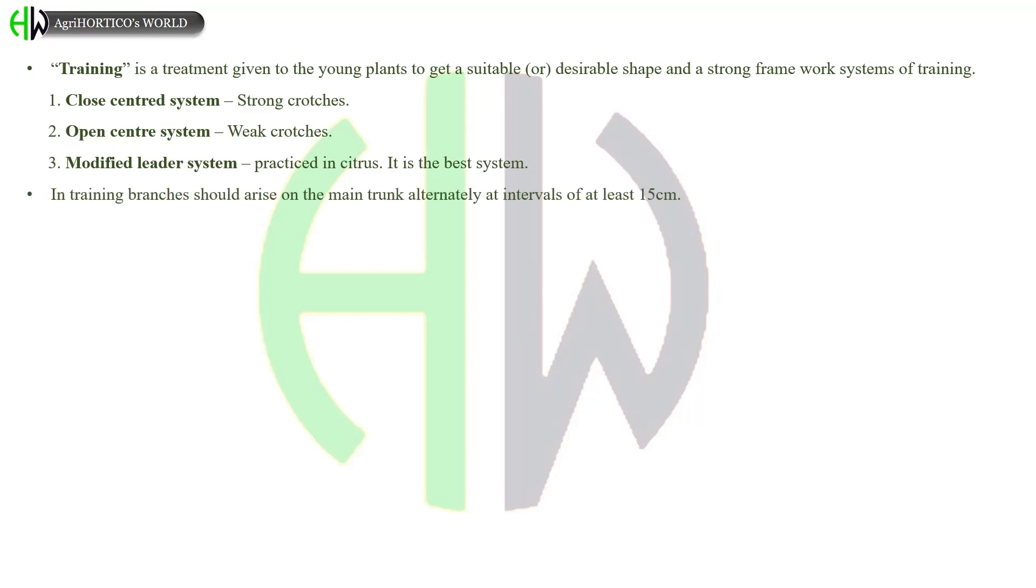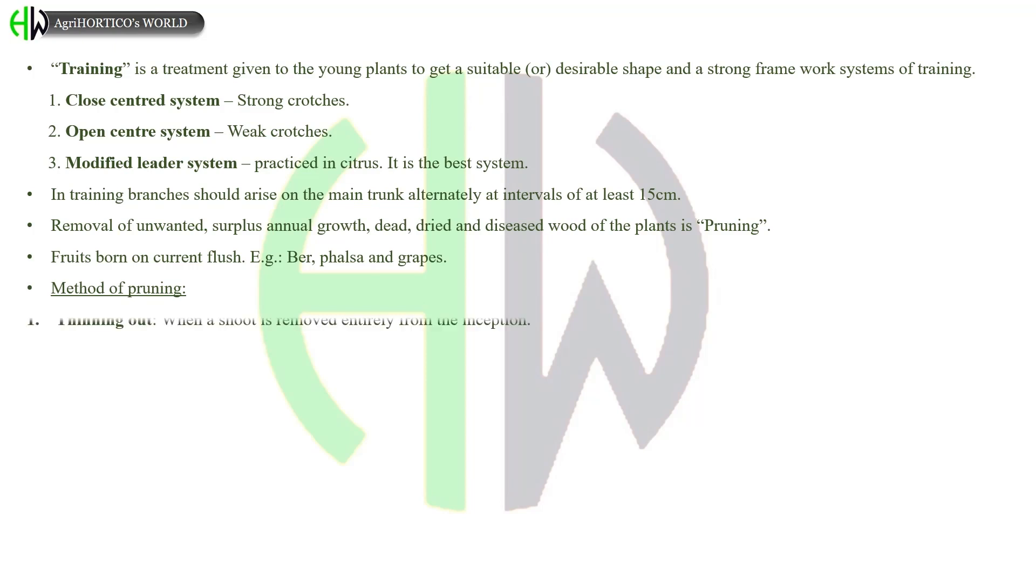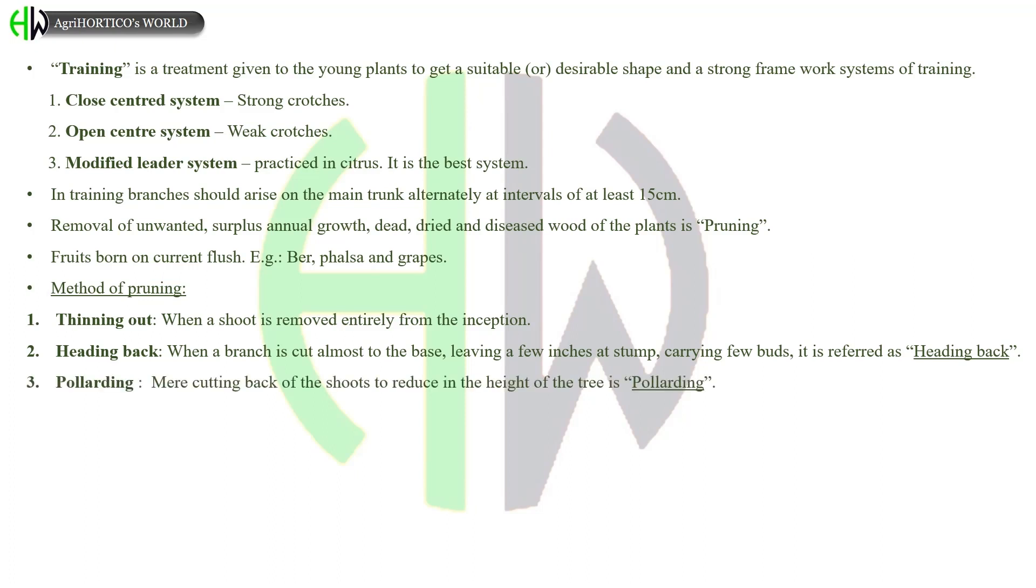Pruning: removal of unwanted surplus annual growth, dead, dried, and diseased wood of the plants is called pruning. Fruits born on current flush are ber, falsa, and grapes. Here are few methods of pruning. Thinning out is when a shoot is removed entirely from the inception. When a branch is cut almost to the base leaving a few inches as stump carrying few buds, it is referred as heading back. In pollarding, mere cutting back of the shoots to reduce the height of the tree is pollarding. Training means cutting the growth of the twig. Pinching or tipping is removal of the tip of the shoot. This is practiced in marigold, chilies at the time of transplanting.